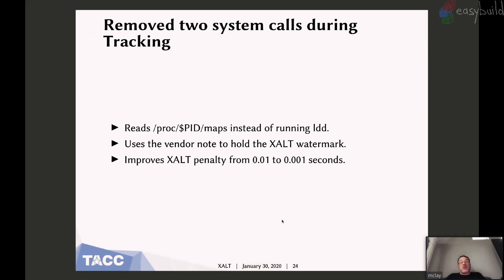Exalt used to use LDD to find out what shared libraries were in the executable. I've now switched it to read /proc/PID/maps to get that information. Also, to find the watermark, I used the trick from OGRT, which uses a vendor note in the ELF format. That means I can use an ELF library call to get the watermark rather than running objdump. This improves the penalty from Exalt from about a hundredth of a second to about a thousandth of a second — I'm really happy about that.